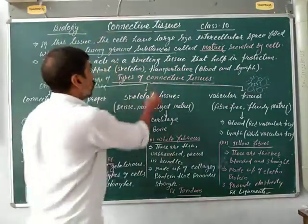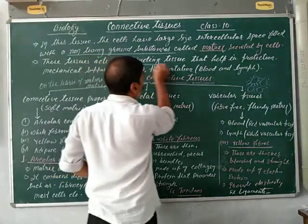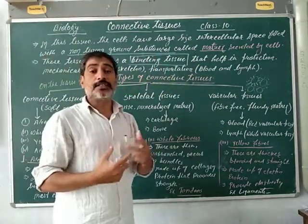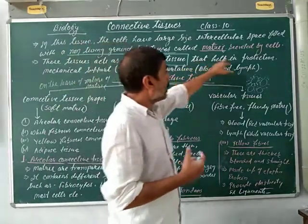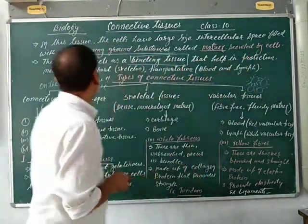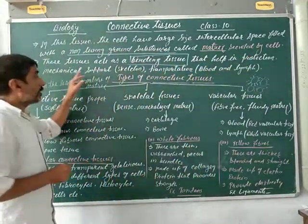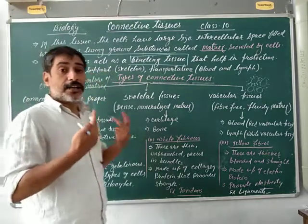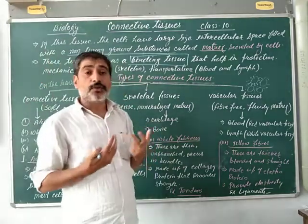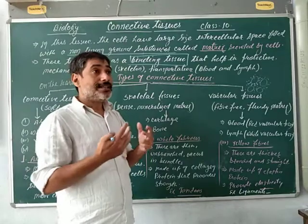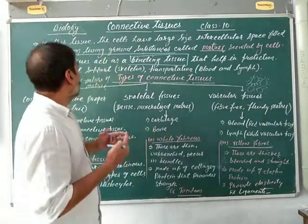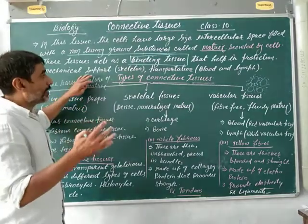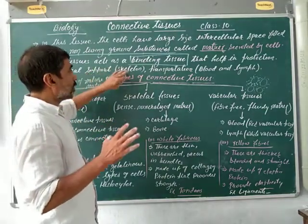This tissue acts as a binding tissue that binds the different organs in our body. That helps in the protection and mechanical support, such as the rib cage, our bones, our skull bones. These bones help to support and protect our rib cage organs.